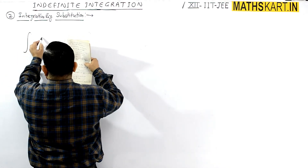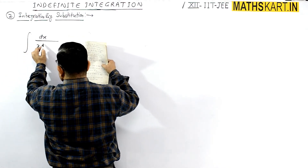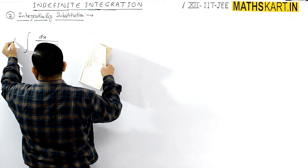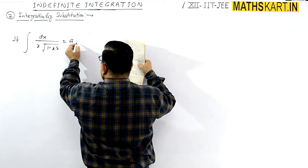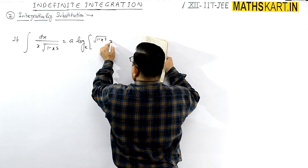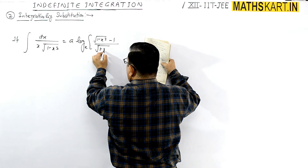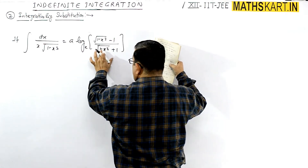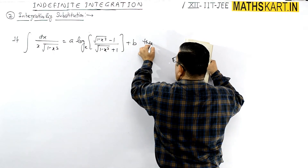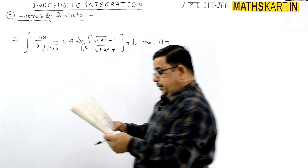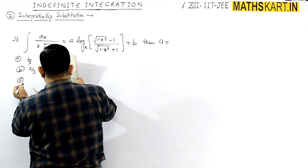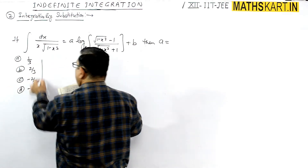Next question: dx upon x root of (1 minus x³). If this equals A · log of [root(1 minus x³) minus 1] upon [root(1 minus x³) plus 1] + B, then find A. Options: A = 2/3, B = minus 2/3, C = 1/3, D = minus 1/3.